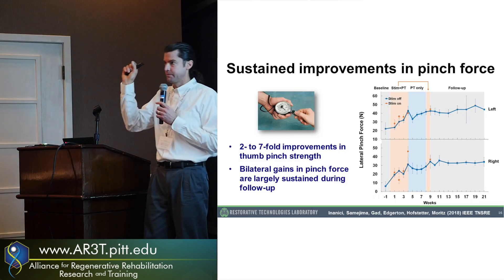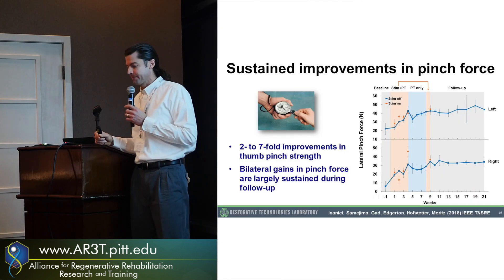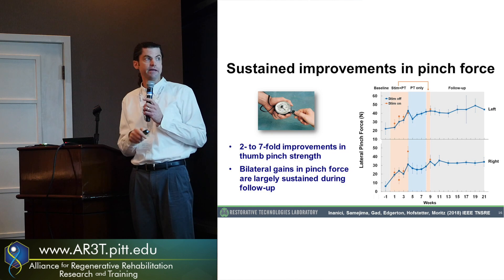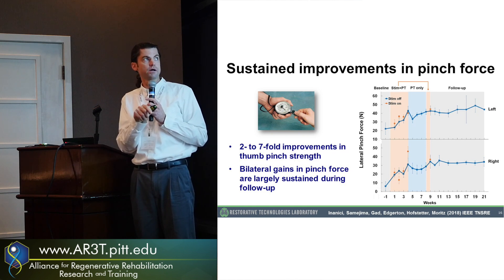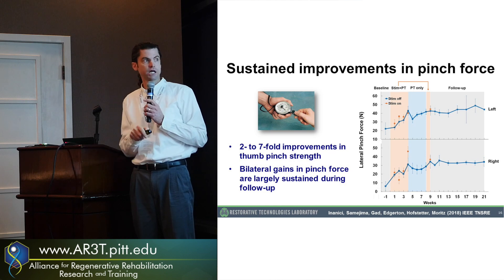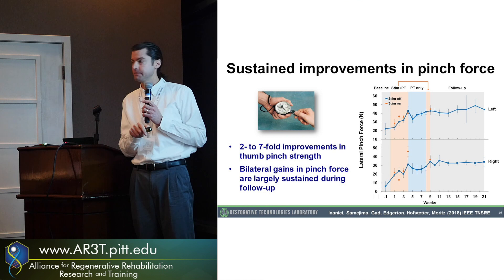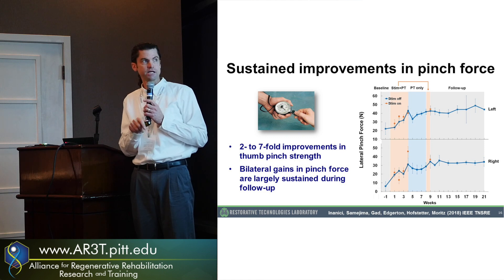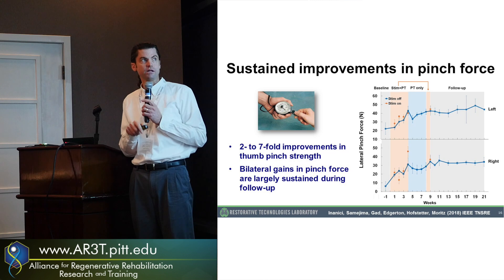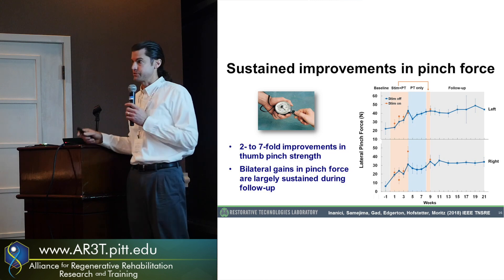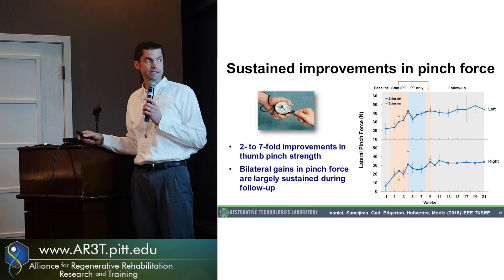Functional pinch force was one of his nice improvements. When we ask him to do a tip-to-tip pinch or key pinch on a force meter — especially his weak right hand — he could produce only about six newtons at the beginning of the study. He actually has almost a seven or eight-fold improvement in grip strength when the stimulator is running, and about a four-fold improvement when the stimulator is off. That improvement sustained during follow-up, with about a doubling in his left hand, which was stronger when he began the study.